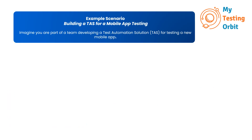Let's first have a look at our example scenario. We are building a TAS for mobile app testing. Imagine you are part of a team developing a test automation solution for testing a new mobile app. Think of TAS requirements as the instructions or guidelines that tell us how our TAS should work. These requirements can be divided into two main groups, just like sorting toys into two different boxes.